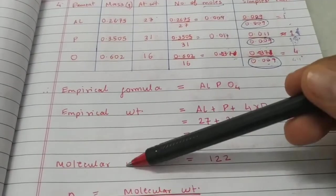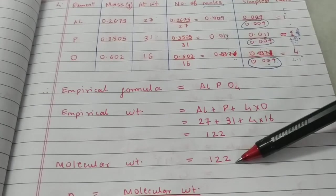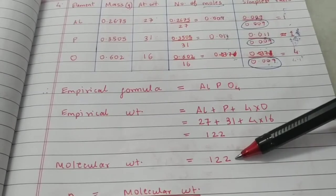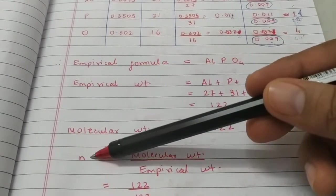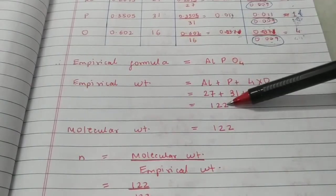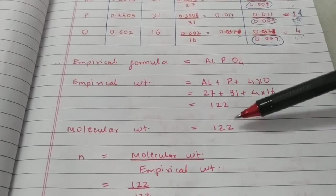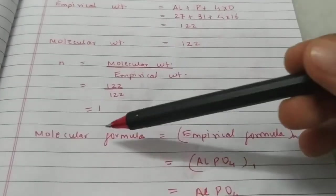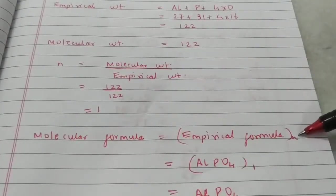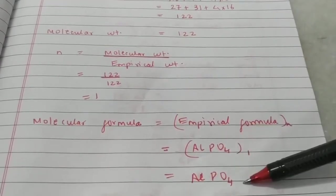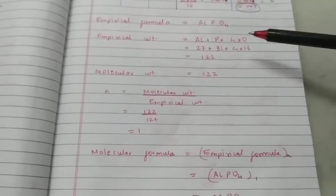Step 3: Write the molecular weight. In this sum, the molecular weight is given ready-made as 122. Step 4: Find the value of n, where n = molecular weight ÷ empirical weight. In this case both are 122, so n = 1. Step 5: Molecular formula = empirical formula × n. Since n = 1, the empirical formula is the same as the molecular formula — AlPO4 is the final answer.